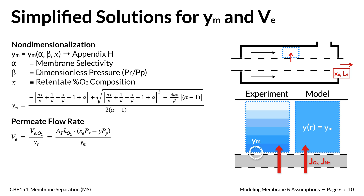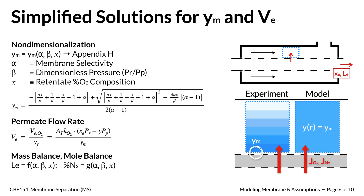The oxygen molar flow rate was determined by multiplying the effective membrane area by the oxygen molar flux through the membrane. Using a mass balance between the inlet and two outlet streams, our team developed equations for the retentate molar flow rates and the retentate nitrogen composition. These two equations were used to determine the optimal operating conditions for the modeled membrane in a spreadsheet.